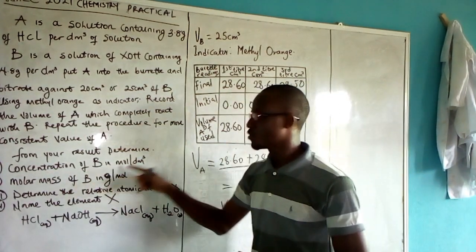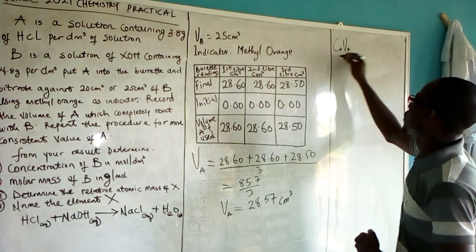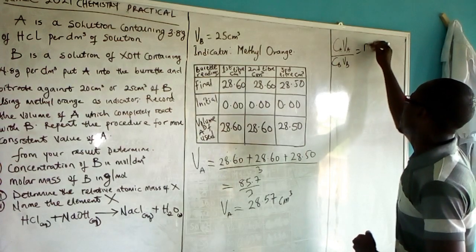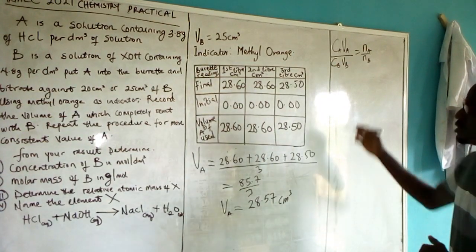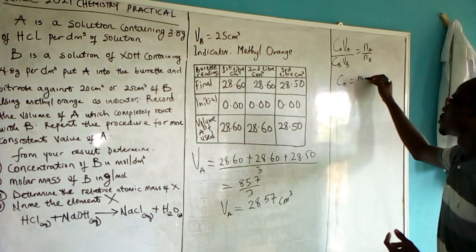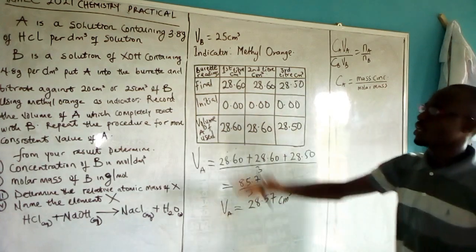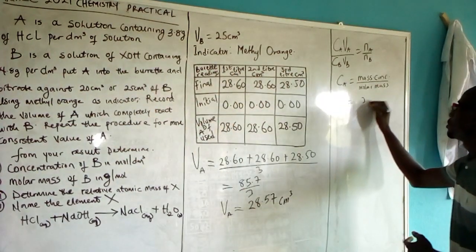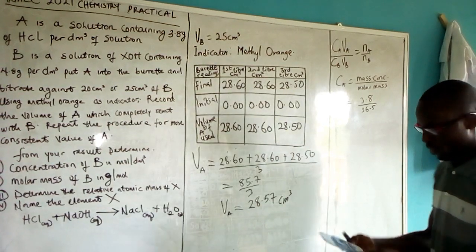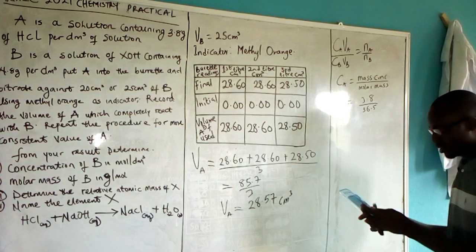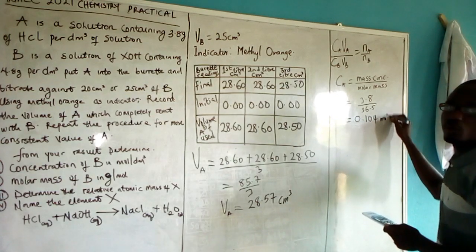We are told to calculate the concentration of B. First, we find the concentration of A using: CA = mass concentration ÷ molar mass = 3.8 ÷ 36.5 = 0.104 mol/dm³. Then using the titration formula CA × VA / CB × VB = nA/nB, and since HCl reacts with XOH in a 1:1 ratio, we get: 0.104 × 28.57 = CB × 25. That gives 2.971 = 25 CB, so CB = 2.971 ÷ 25 ≈ 0.12 mol/dm³.